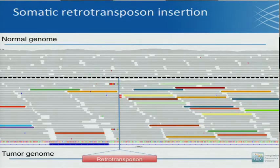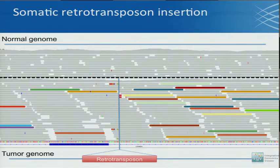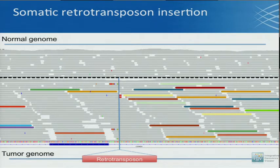Here's an example output from a RetroSeq run — this is an IGV view. At the top you see the normal genome and all the reads are normally aligned. On the bottom is the tumor genome, where you see clusters of colored reads. These colored reads represent reads whose pair mates align to a retrotransposon somewhere else in the genome, showing evidence for a retrotransposon insertion at the blue line. Interestingly, this example is from the CSMD3 gene, which has been discussed at length during this conference for being frequently mutated — so it appears it's mutated in this way as well.